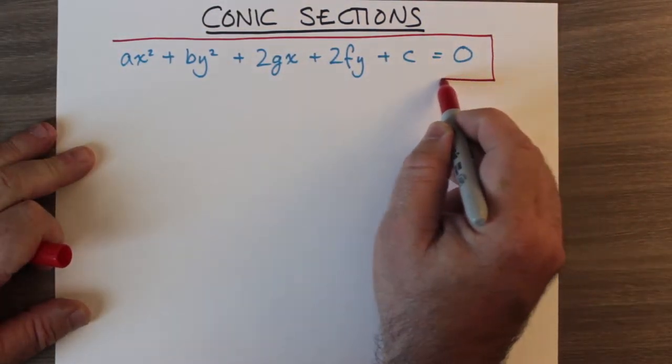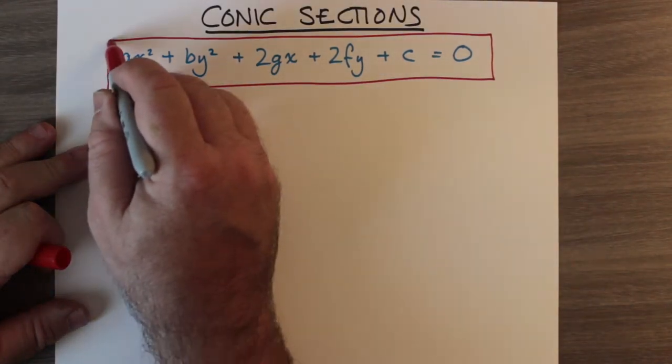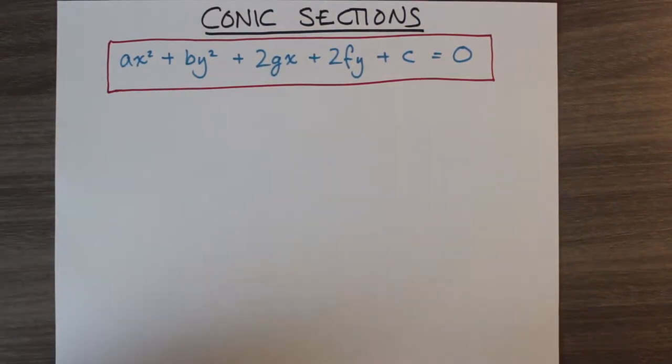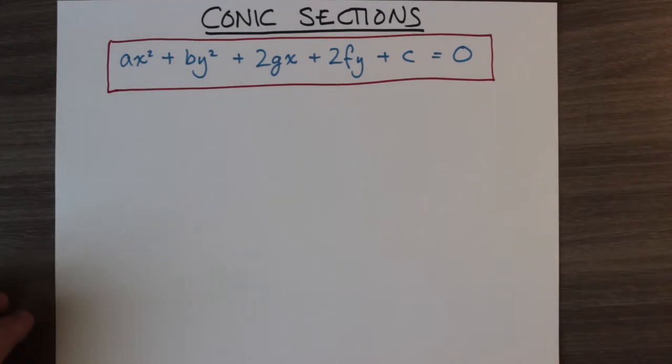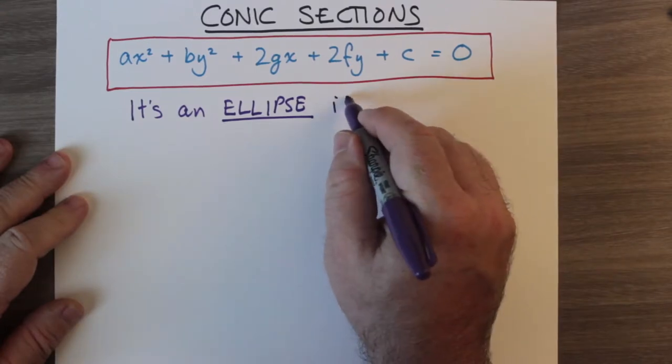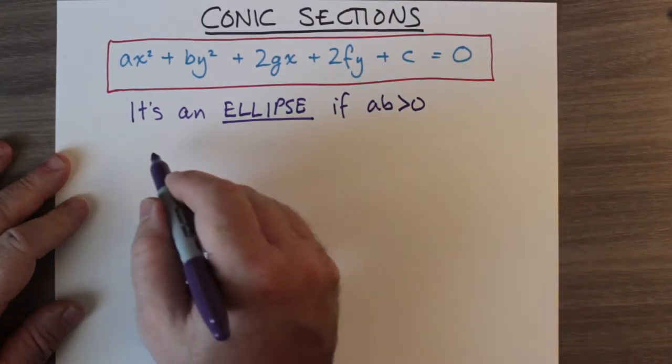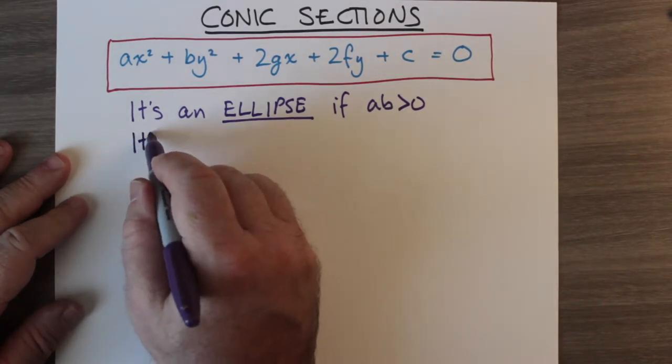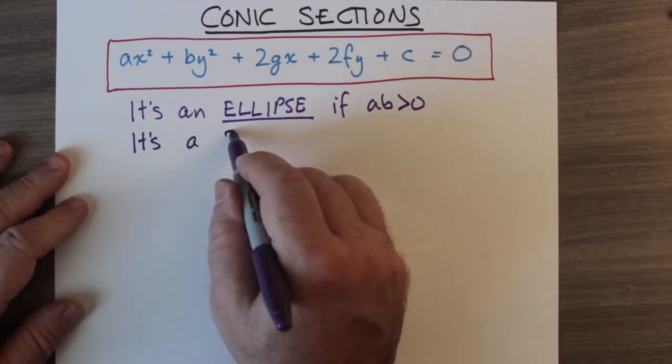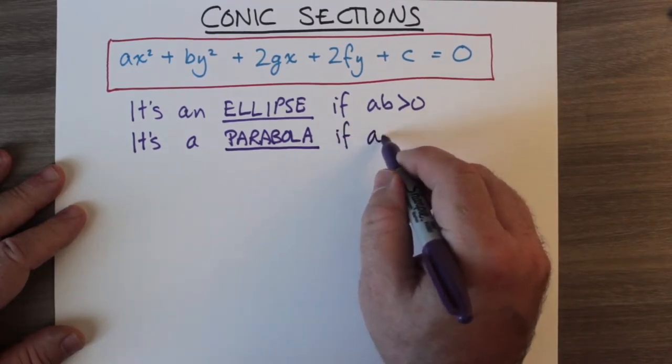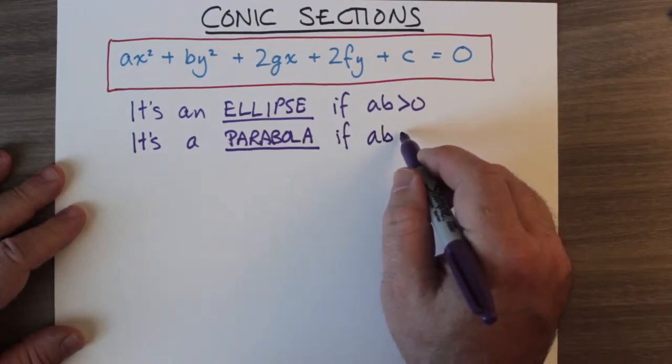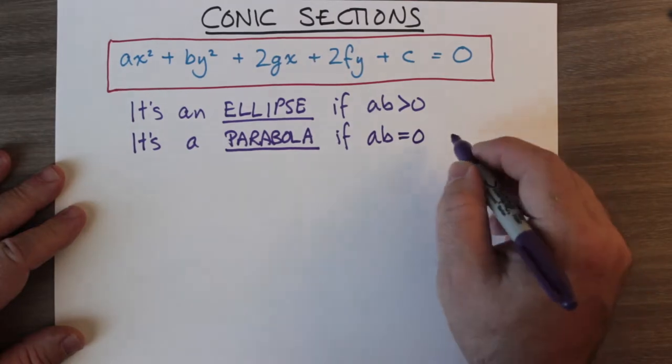There are certain conditions under which you get certain conic sections for certain values of these coefficients. For example, if ab > 0 then you can say it's an ellipse, and actually graphing it will bear it out. If ab = 0 then it's a parabola. That means that either x² or y² has a coefficient on it of zero.